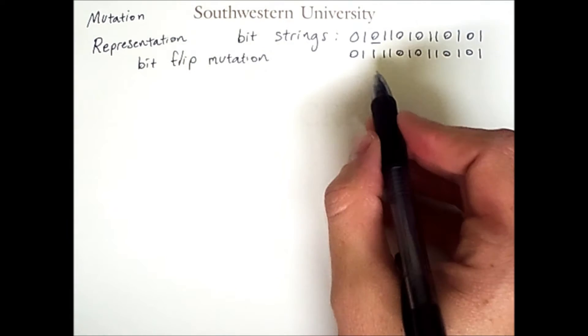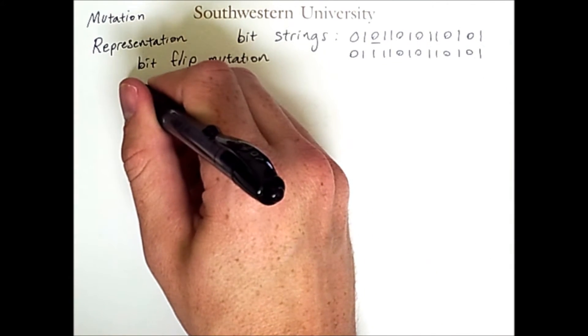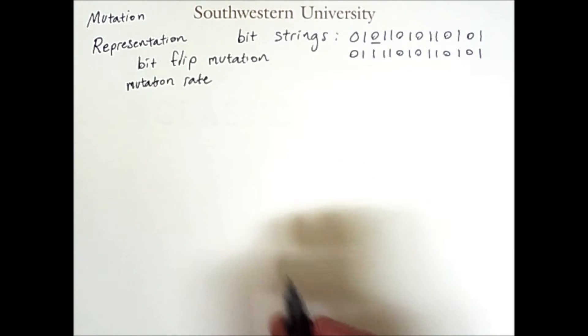Whether or not a bit is flipped depends on the mutation rate. However, it also depends on what this rate signifies. You could define the mutation rate as the chance of a mutation occurring.